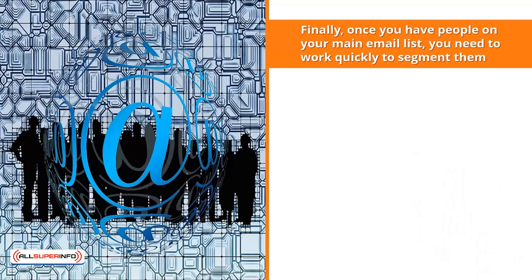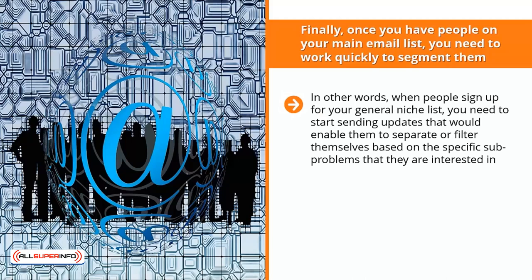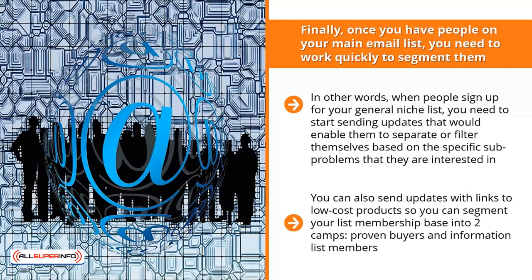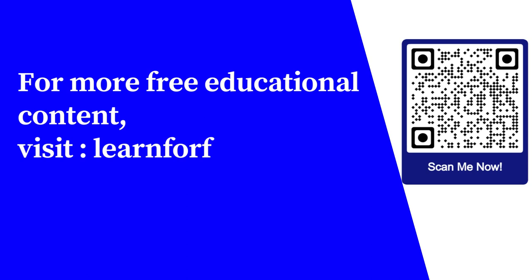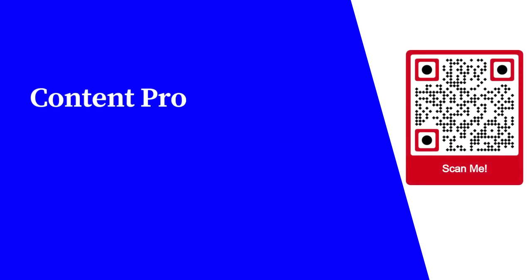Finally, once you have people on your main email list, you need to work quickly to segment them. When people sign up for your general niche list, start sending updates that enable them to filter themselves based on the specific sub-problems they are interested in. You can also send updates with links to low-cost products to segment your list into two camps: proven buyers and information list members. Once you have these two segmented lists, you can spend more time converting proven buyers to purchase higher-dollar items.